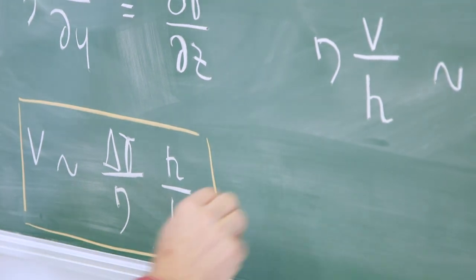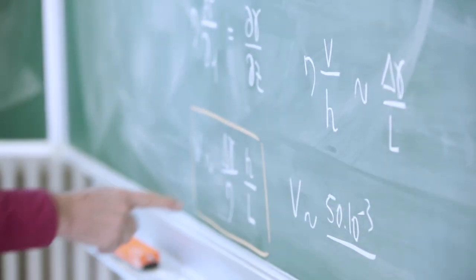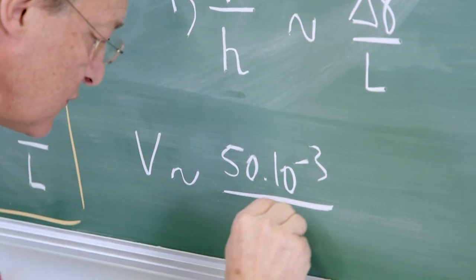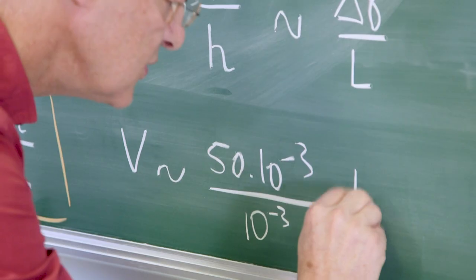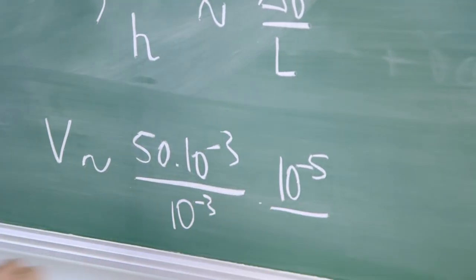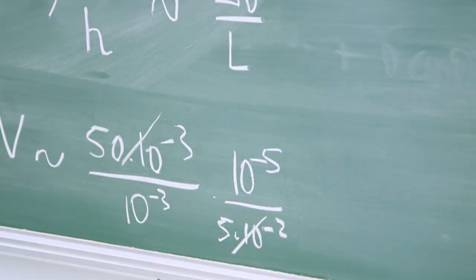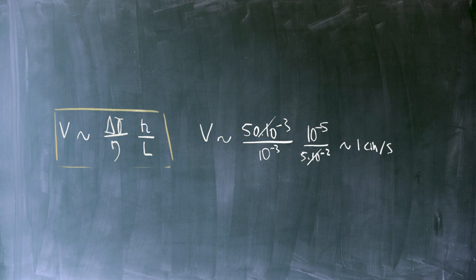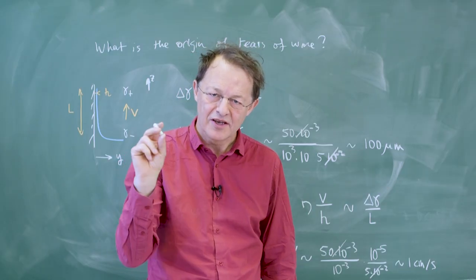If we put numbers, v is expected to be, well, you remember this is 50×10^-3. η is the viscosity of a mixture of water and alcohol, so it's 10^-3. h, well, we said that when we swirl the liquid, we get a film which is about 10 micrometers in thickness, and L is the size of the glass, 5 centimeters. And so we get a velocity which is amazingly high considering the thickness of the film, around 1 centimeter per second. Indeed, Marangoni flows are very efficient to drive liquids in thin films.